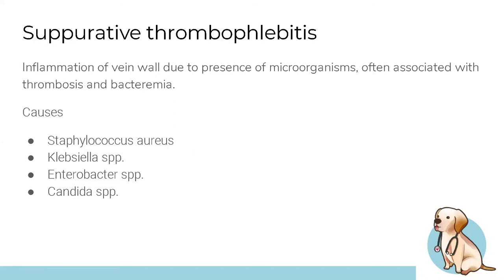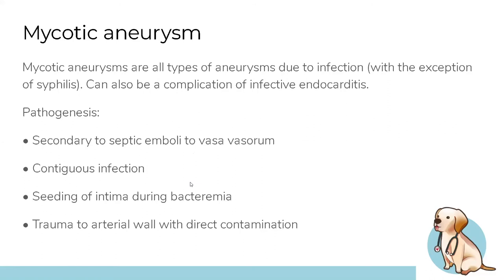Suppurative thrombophlebitis involves inflammation of the vein wall associated with thrombosis and bacteremia — bacterial presence in the blood. Mycotic aneurysm refers to vessel dilation caused by infection and can be a complication of infective endocarditis or its own standalone condition.